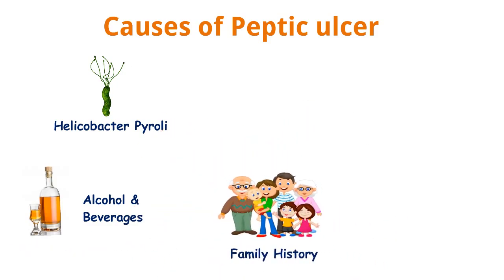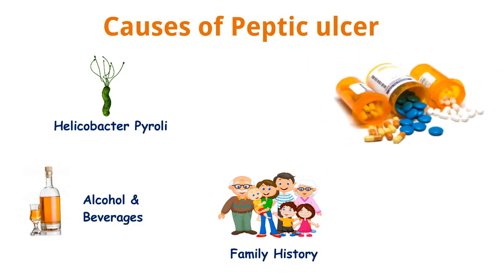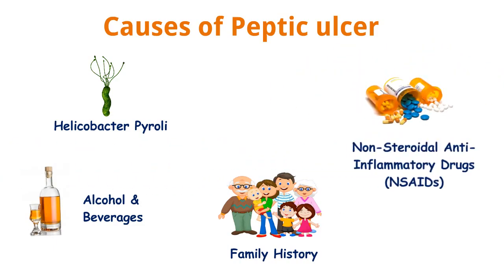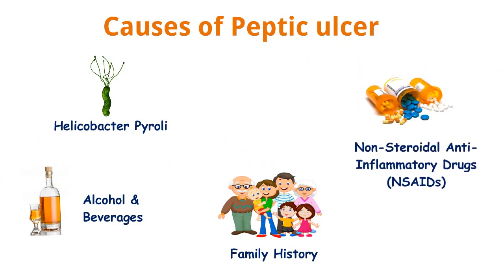The next cause is family history. If your family members have previously suffered from Peptic Ulcer, you may be at a higher risk. Another cause is the use of non-steroidal anti-inflammatory drugs. Extensive use of NSAIDs is also responsible for the development of Peptic Ulcer.